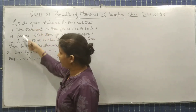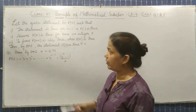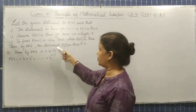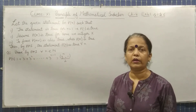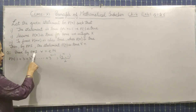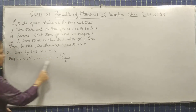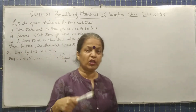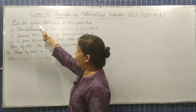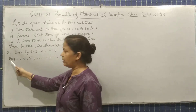If all three points satisfy the given condition, then by the Principle of Mathematical Induction, statement P(N) is true for all natural numbers. Now let's come to the question. We are told to prove by PMI for all N belonging to natural numbers that the given statement is true, and we will assume it as P(N).